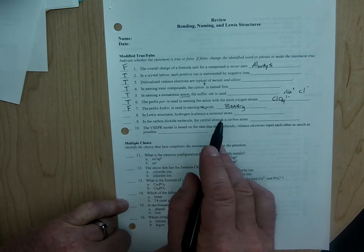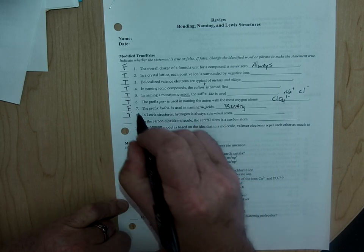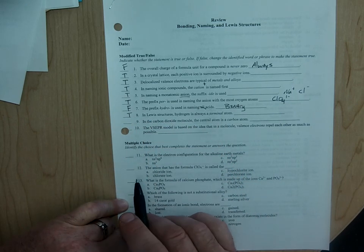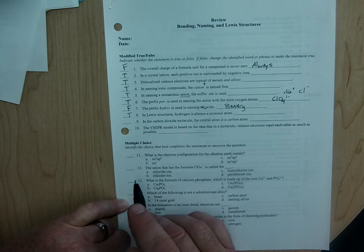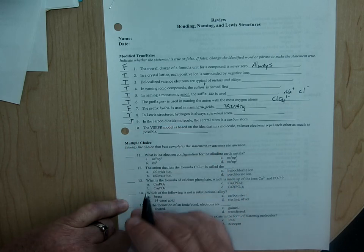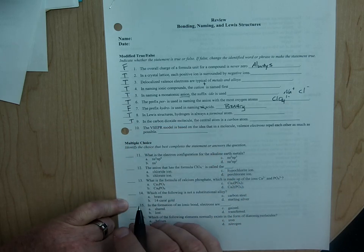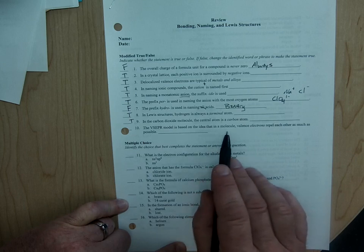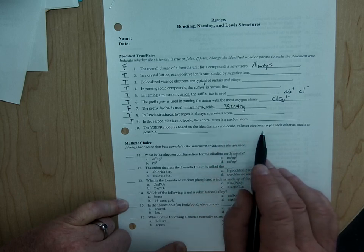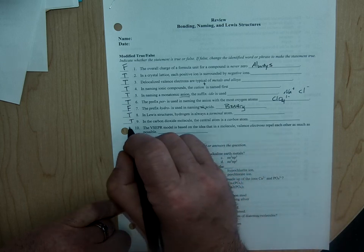In Lewis structures, hydrogen is always a terminal atom. It's true. In carbon dioxide molecule, the central atom is a carbon atom. Yep, it is. And the VSEPR model is based on the idea that in a molecule, valence electrons repel each other as much as possible. Also true.